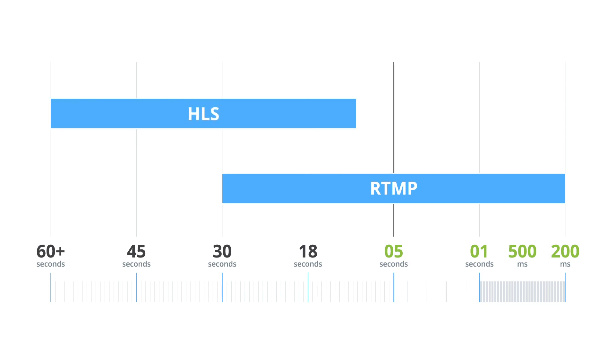This isn't a deal breaker for every production, but could really matter for some. For example, productions that thrive on viewer interaction, like webinars and live Q&As — here, 10 to 15 seconds can make a world of difference for viewer engagement, taking away from that feeling of being there with the talent. It might be better to stick with RTMP in such cases, or use a high-quality, low-latency protocol like SRT.